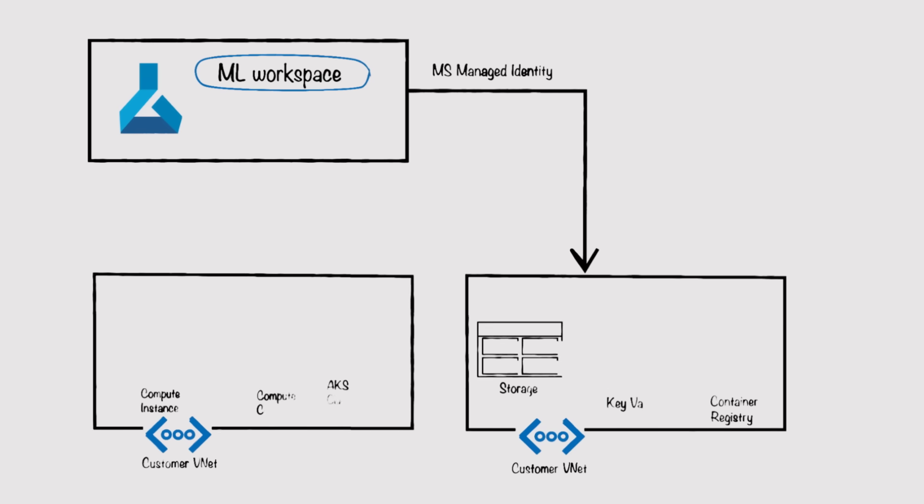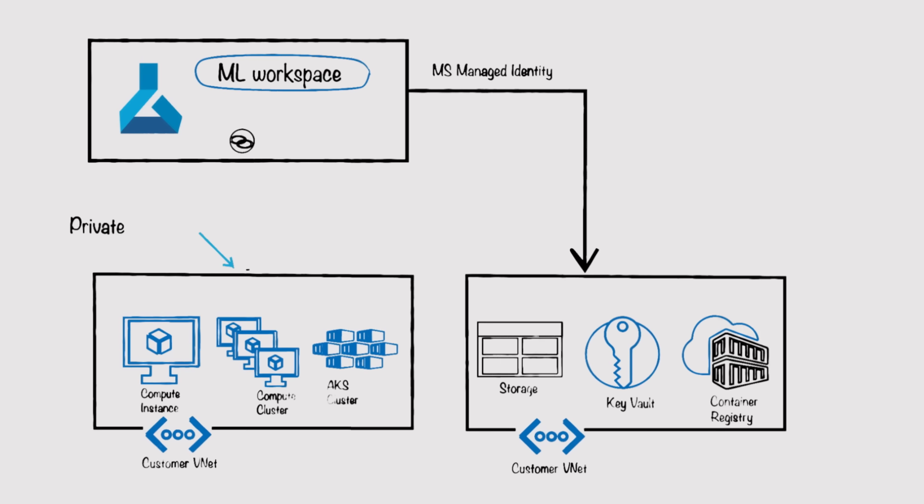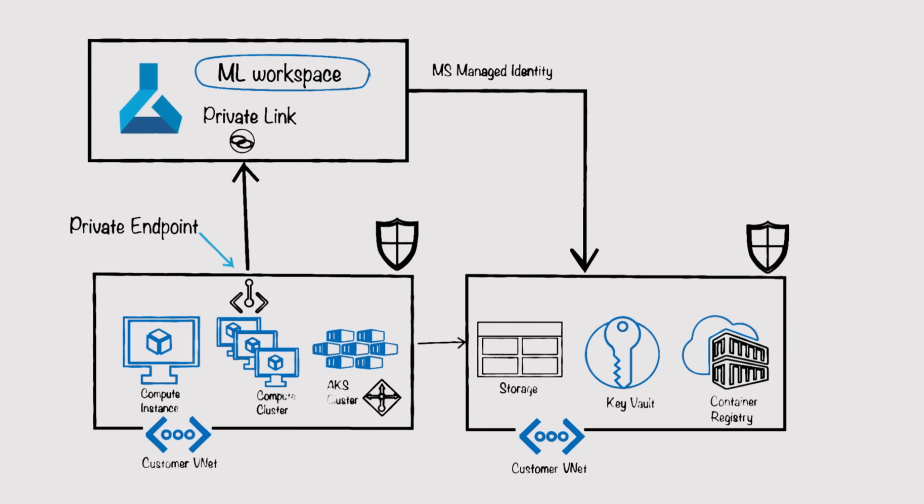But network security is not only about putting your ML workspace inside a VNet. A machine learning environment typically interacts with a bunch of other services like storage, container registry, Kubernetes service, etc. We should ensure that these services can also communicate securely with the machine learning workspace. This is where private link comes in. The Azure Machine Learning workspace can use Azure Private Link to create a private endpoint behind the VNet. This provides a set of private IP addresses that can be used to access the workspace from within the VNet. Some of the services that Azure Machine Learning relies on can also use Azure Private Link, but some rely on network security groups or user-defined routing.